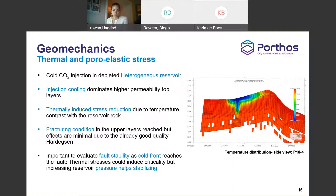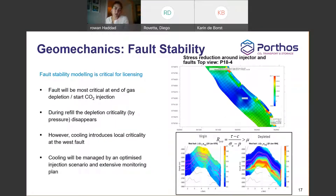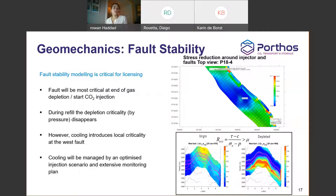Fault stability is a critical and somewhat two-way issue: at the end of depletion, your fault is most critical because of differential compaction, but as you start injecting, pressure goes up and the fault stabilizes. But at some point, you introduce cooling and the fault becomes dominated by temperature effects again. There is a balance in between — we have to make sure that when we inject we don't induce any fault destabilization, and that is all through coupled modeling.